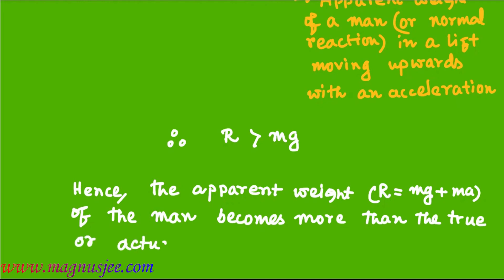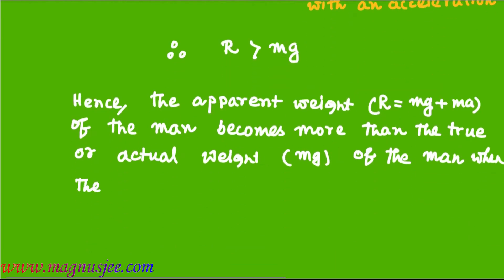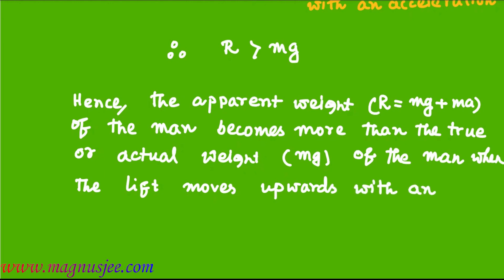The apparent weight becomes more than the true weight or actual weight mg of the man when the lift moves upwards with an acceleration A. Hence the apparent weight of the man becomes more than his true weight or actual weight when the lift moves upwards with an acceleration, or when the lift accelerates upwards.